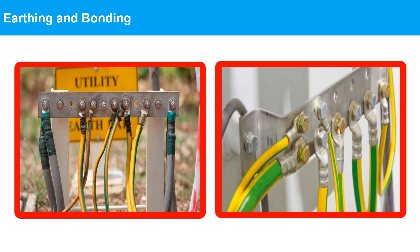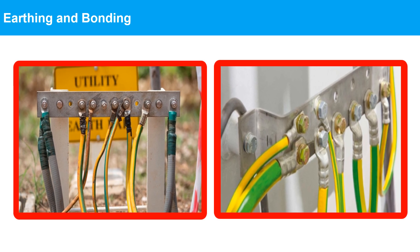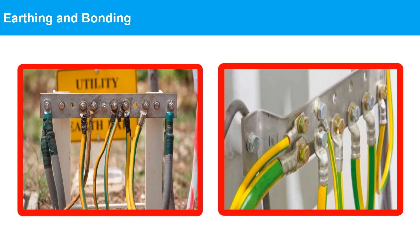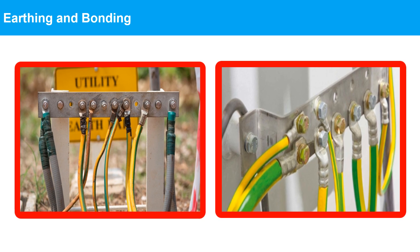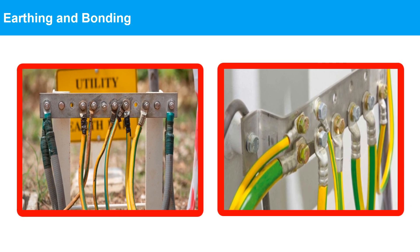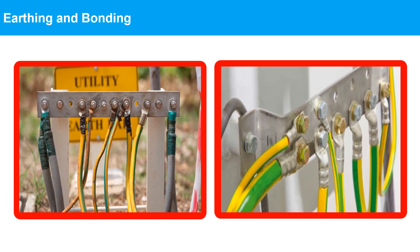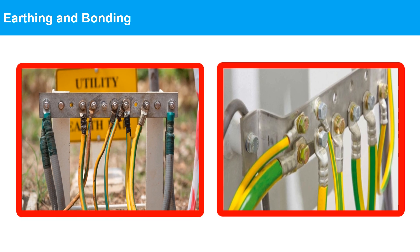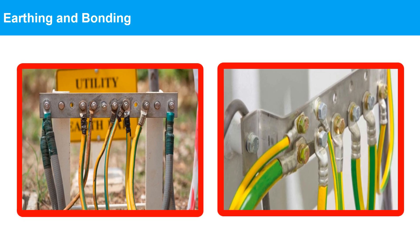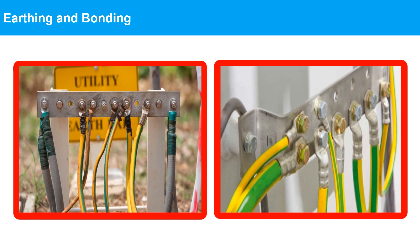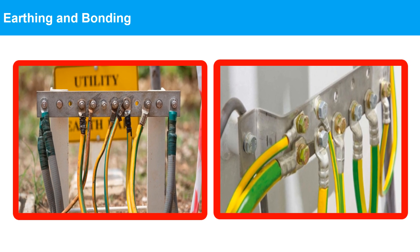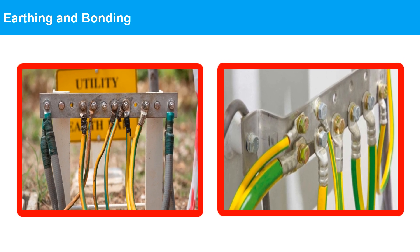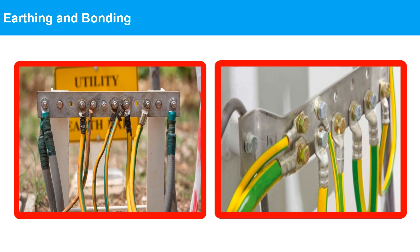Earthing is a way of protecting equipment so that, in the event of an electrical fault, current flows safely to earth rather than through a person who might be touching the equipment. This protects the person from fatal electric shock and also often provides secondary protection to the equipment, because a large fault current flowing to earth will overrate the fuse or MCB.